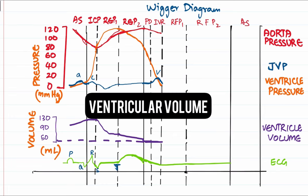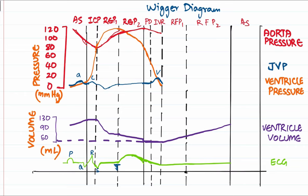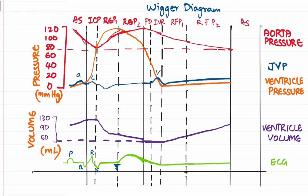On the final Wiggers diagram for the diastolic phases: the ECG corresponds to the T-P interval; ventricular volume increases as 70 percent filling occurs; ventricular pressure increases slightly; atrial (JVP) pressure shows a dip then rises higher than ventricular pressure; and aortic pressure declines from 120 to about 80 mmHg. The cycle then repeats with the next P wave, ventricular volume rising to 130 mL. That completes the events of the cardiac cycle.